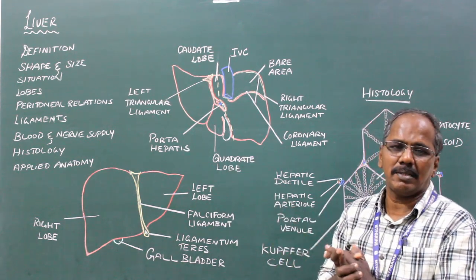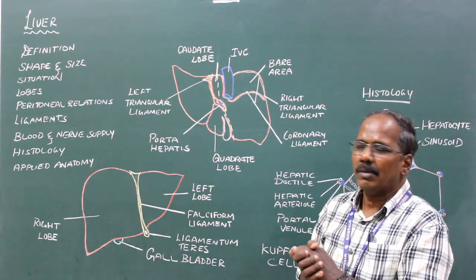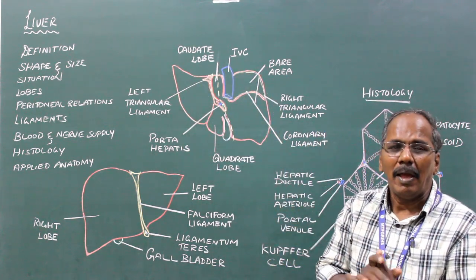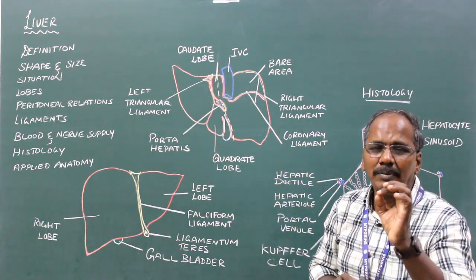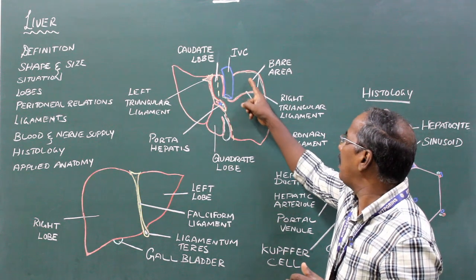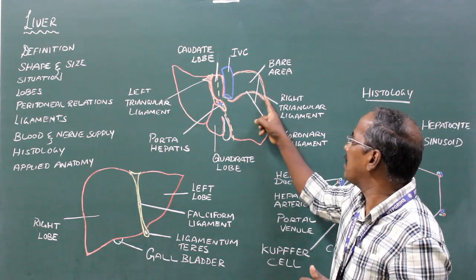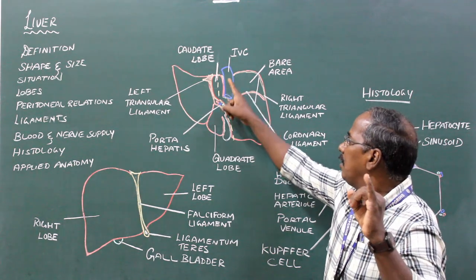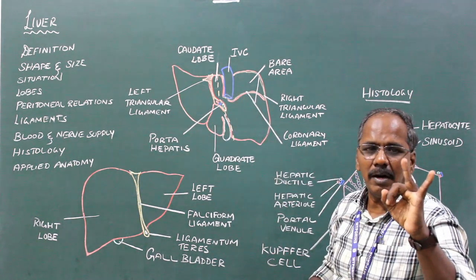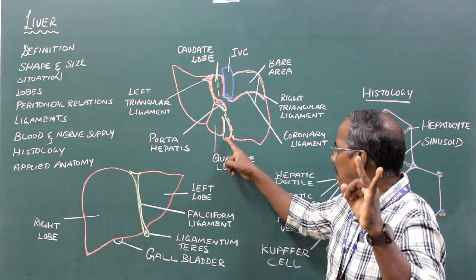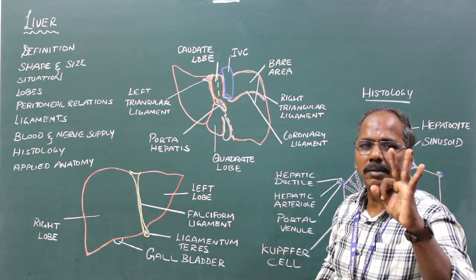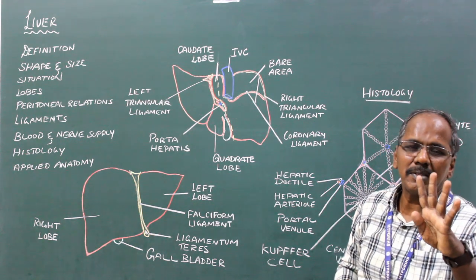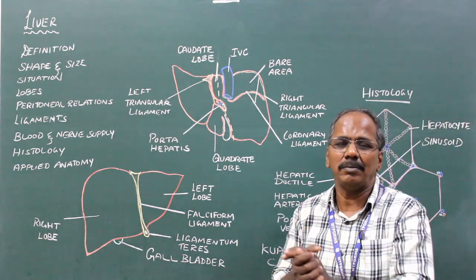Peritoneal relations. Most of the liver is covered by peritoneum except the bare area of the liver, the groove for inferior vena cava, the fossa for the gallbladder, and the porta hepatis. These are the areas which are not covered by the peritoneum.